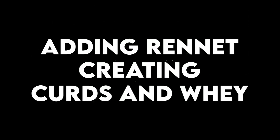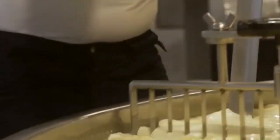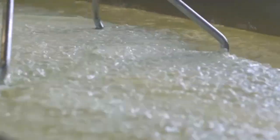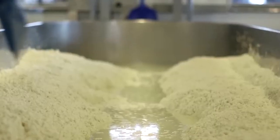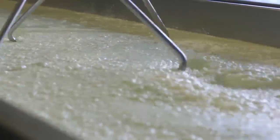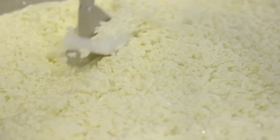Adding rennet: creating curds and whey. Once the starter cultures have done their work, it's time to add something called rennet. Rennet is a natural enzyme, and its job is to make the milk curdle. Curdling means the milk starts to separate into solid and liquid parts. The solid part is called curds, and the liquid part is called whey.